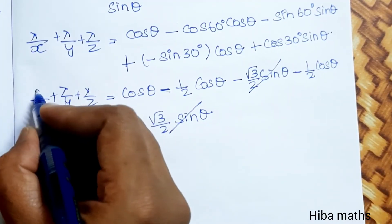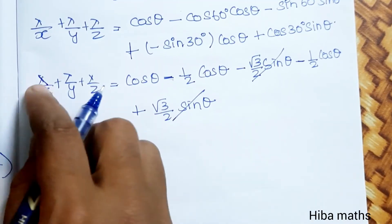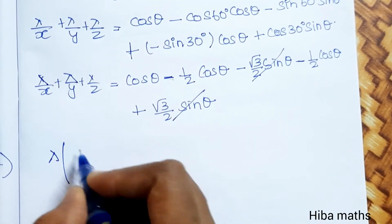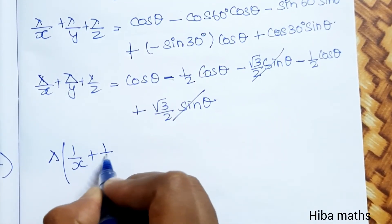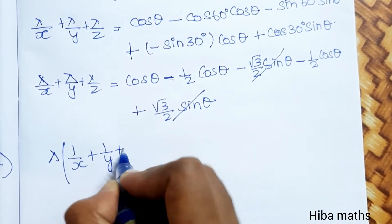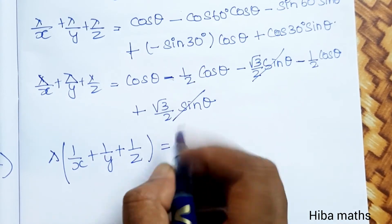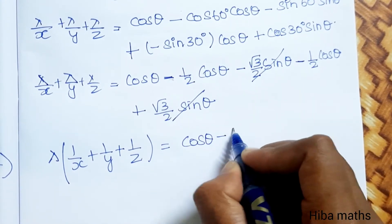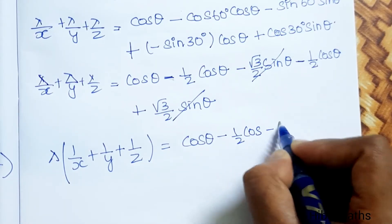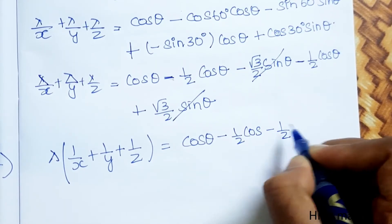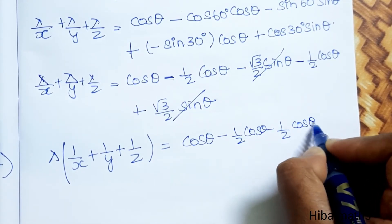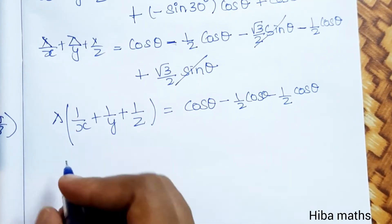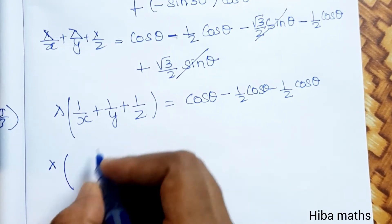On the left-hand side, after cancellation: λ(1/x + 1/y + 1/z). The cos θ terms simplify: cos θ − (1/2)cos θ − (1/2)cos θ = cos θ − cos θ = 0. So the whole left-hand side equals zero, going to the next line.